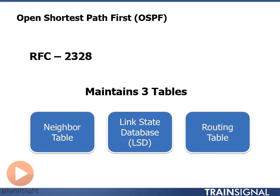Open Shortest Path First is identified by an RFC — that RFC is 2328. You can just Google for that if you really want to dive into the details of Open Shortest Path First.